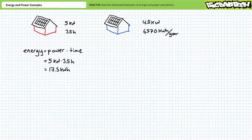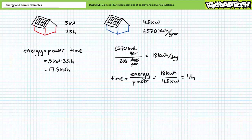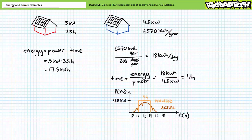For the second problem, consider a 4.5 kilowatt array that over the course of a year is known to produce 6,570 kilowatt hours. Determine the peak sun hours this array regularly experiences. We first need to determine the average daily output: 6,570 kilowatt hours over 365 days equals 18 kilowatt hours per day. Time is energy over power: 18 kilowatt hours over 4.5 kilowatts demonstrates the system regularly experiences four hours of peak sun. The sun shines with varying intensity, but on average this system yields an equivalent amount of energy as if the sun shone at full intensity for only four hours.